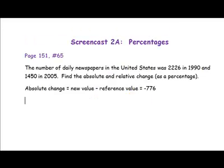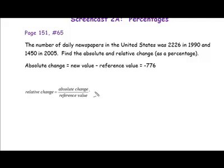Part 2 of the problem asks us to find the relative change. The formula to find relative change is the absolute change divided by the reference value. In our particular problem, the absolute change, which we found from the previous part, was negative 776. That's going to go into the numerator of our fraction.